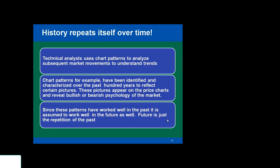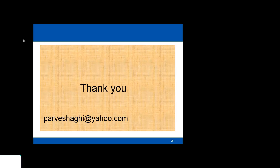The third principle of technical analysis is that history repeats itself over time. Technical analysis uses chart patterns to analyze subsequent market movements and understand trends. Chart patterns have been identified and characterized over the past hundred years and reflect certain pictures that appear on price charts, revealing the bullish or bearish psychology of the market. Because these patterns have worked well in the past, they are assumed to work well in the future — the future is just a repetition of the past.